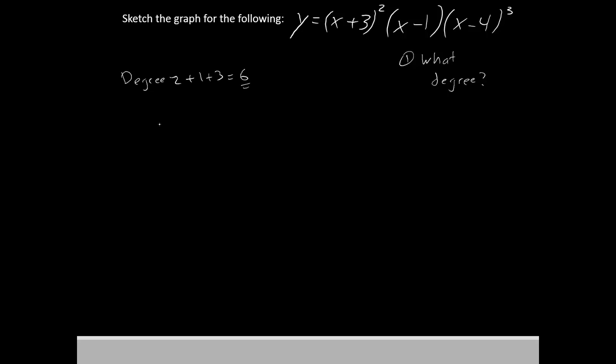Now whether the degree is even or odd will make a difference. If you have an even numbered degree, your graph will look something like this. It may have a few more twists and turns in it though. If you have an odd degree, it'll look kind of like this.